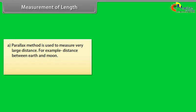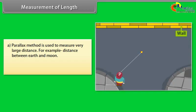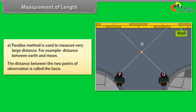A) Parallax method is used to measure very large distance, for example distance between earth and moon. Let us understand with an example. A girl is observing the rod against a wall from two different points P and Q. She notices that the position of the rod seems to change with respect to the wall. This is known as parallax.